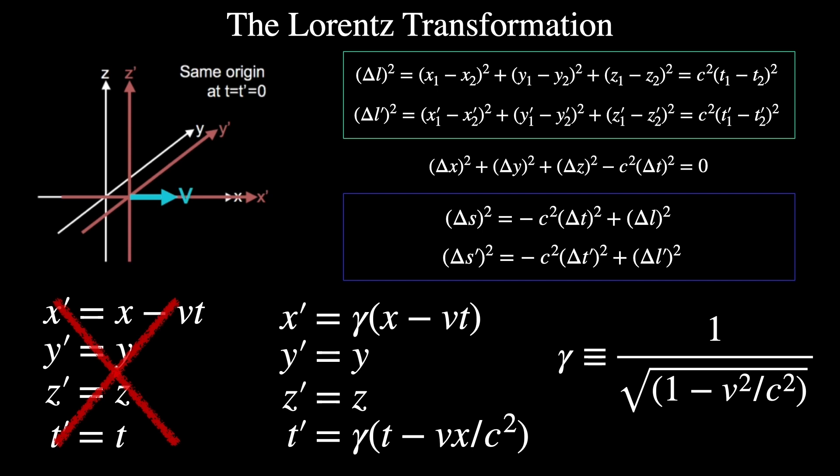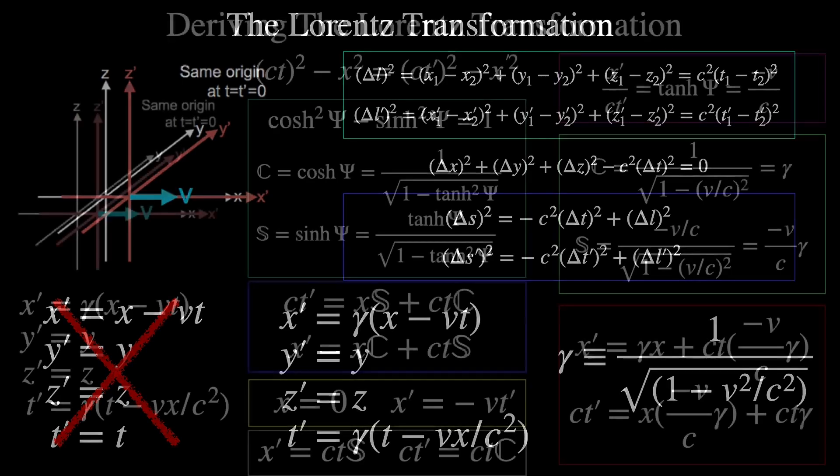But when you're chatting with each other about the events you both measure in different frames, you get different results. Okay, now let's see where this transformation comes from.